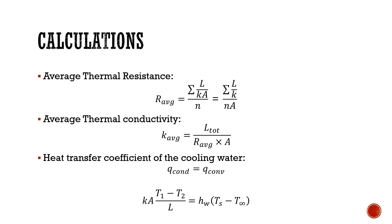The heat transfer coefficient is the next thing we are going to calculate. The heat transfer coefficient of the cooling water is not directly given to us. However, we can find it by equating the heat flow by conduction to the heat flow by convection, because we can assume the system is closed and no heat is lost to the environment. This means that K times A times (T1 minus T2) over L — the Q of conduction — is equal to the Q of convection, which is HW times (Ts minus T-infinity). Transposing this, you would find HW, the heat transfer coefficient of the cooling water.